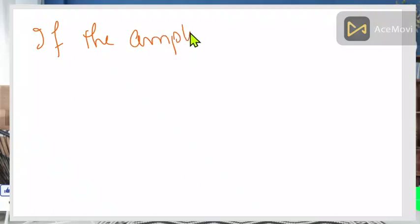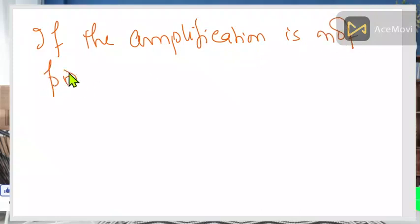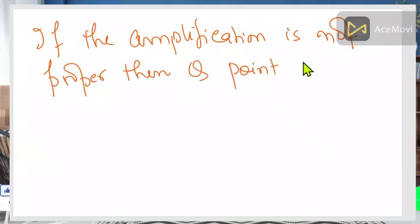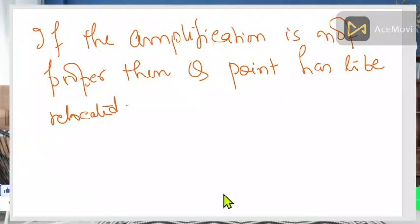Improper amplification may cause clipping or removal of some portions of the input signal. If you observe that the amplification is not proper, then the operating point is unsatisfactory and should be relocated on the collector characteristic. If amplification is not proper, the Q-point has to be relocated or recalculated.